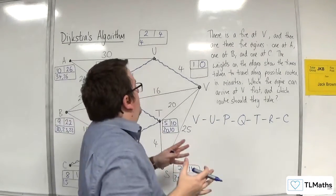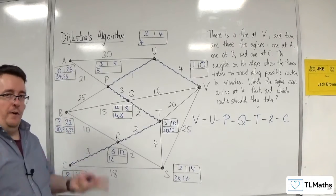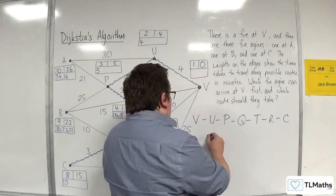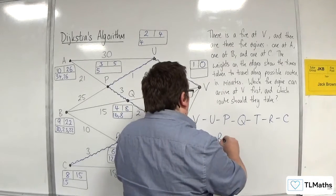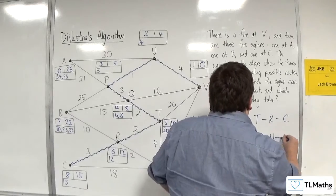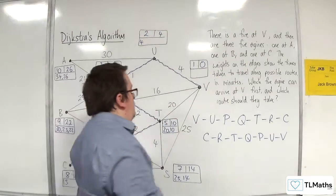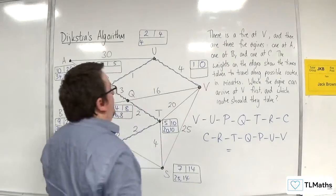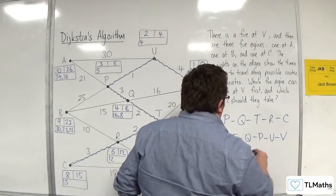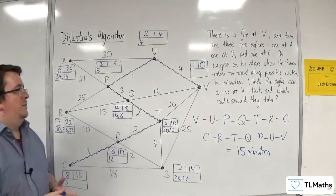Now, I'd done that backwards, but of course, the route at which the fire engine should take is actually the other way around. So they start at C, then they go R to T to Q to P to U to V. It's just a matter of habit that I would write it that way around. And so that shortest distance, sorry, shortest amount of time is 15. So 15 minutes is the answer I'm looking for.